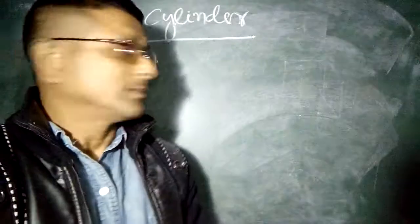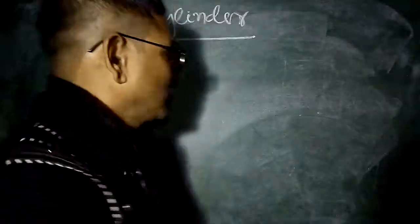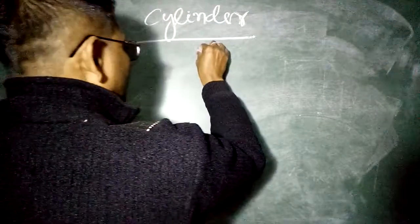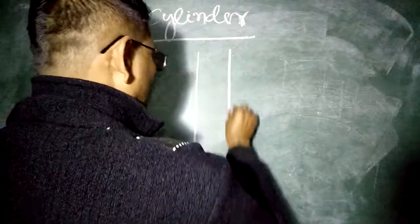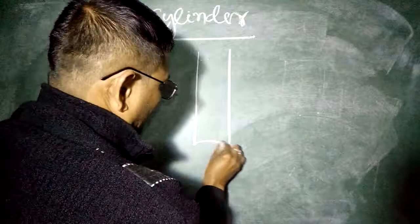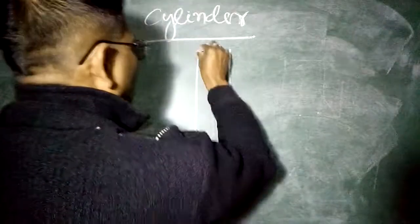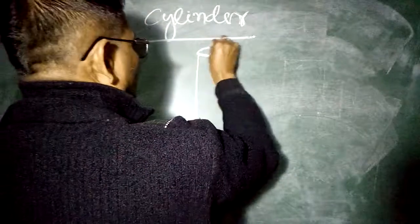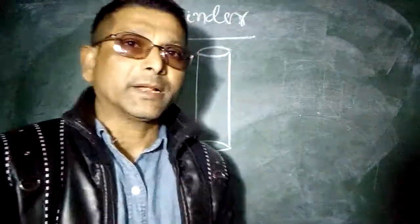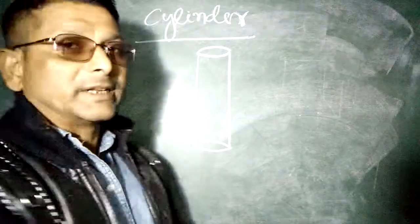Cylinder. Cylinder which is a 3D set, 3D figure. Look at that. This type of pipe, like pipe, this is called cylinder.